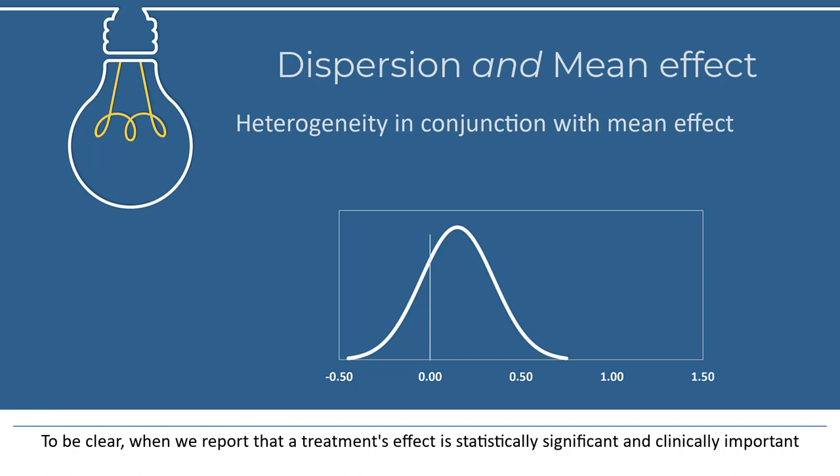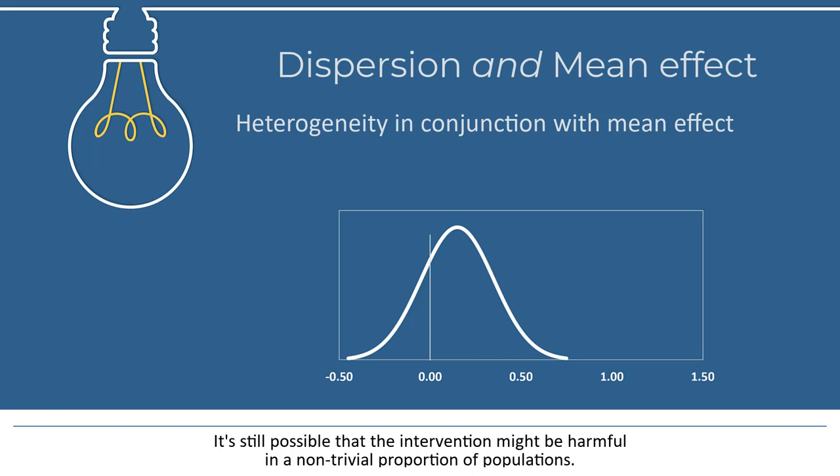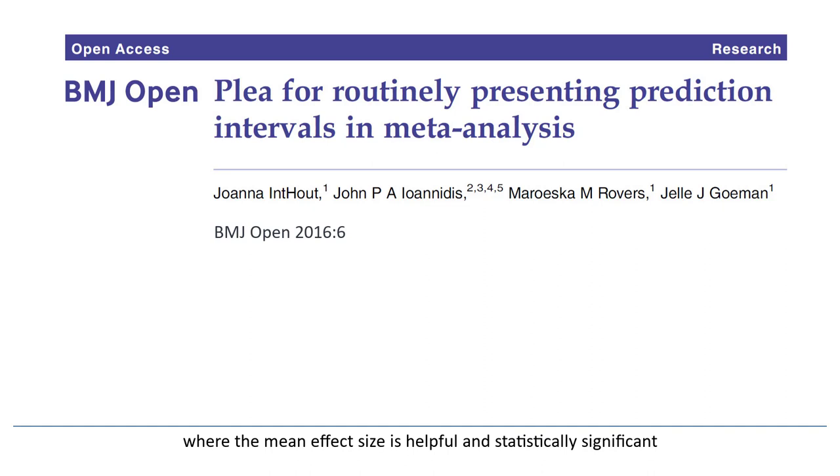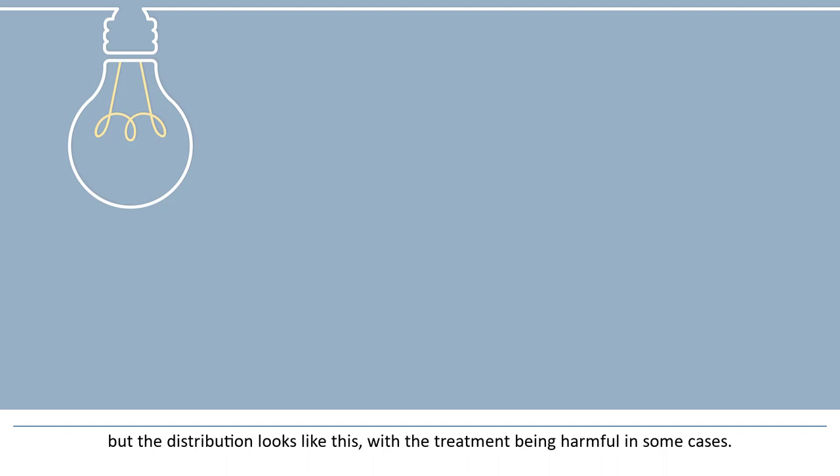To be clear, when we report that a treatment's effect is statistically significant and clinically important, we're talking only about the mean effect size. It's still possible that the intervention might be harmful in a non-trivial proportion of populations. This problem is not only theoretical. Intout et al. recently published a paper showing that there are many analyses where the mean effect size is helpful and statistically significant, but the distribution includes the treatment being harmful in some cases.